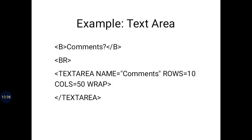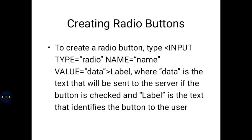When you type in a text area and reach the end of a line, the cursor automatically moves to the next line — that's the wrap behavior. To create a radio button, the syntax is: input type='radio', name, value='data', then a label. 'Data' is the text sent to the server if the button is checked, and the label is the text that identifies the button to the user.